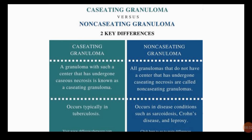A caseating granuloma is one whose center has undergone caseous necrosis. Non-caseating granulomas are all granulomas that do not have a center that has undergone caseating necrosis. Caseating granulomas occur typically in tuberculosis, while non-caseating granulomas occur in disease conditions like sarcoidosis, Crohn's disease, and leprosy.